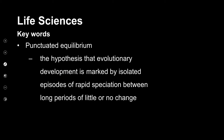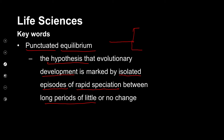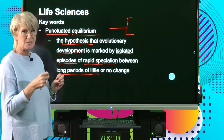Another theory is punctuated equilibrium — actually it's a hypothesis that evolutionary development is marked by isolated episodes of rapid speciation between long periods of little or no change. Punctuated means there are breaks in between, and equilibrium means balance or equal. So basically, long periods of time are punctuated or broken by shorter periods where rapid change occurs, and that's where we see organisms changing.